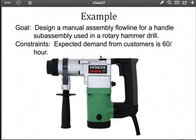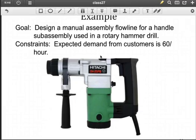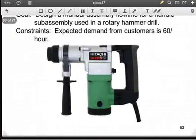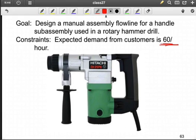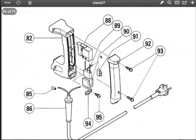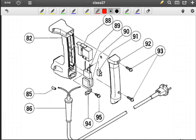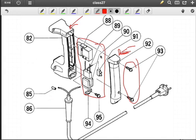We've got a hammer drill here. And we want to come up with a manual assembly flow line to assemble this product. The expected demand from our customer is 60 per hour. So from that 60 per hour, we can determine the maximum service time, which essentially is the inverse of that value. Here's what the breakdown is for the handle of that. And we'll just focus on this portion of the assembly line as our example. You can see we have multiple components. And due to the physical limitations of the assembly, we have some components that have to be assembled before others. For instance, we have a set of components internal to the handle that have to go in before this can be assembled to 82 and before we can essentially fasten that part of the handle to the base.